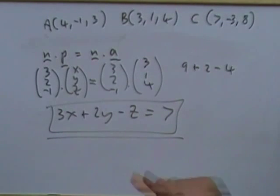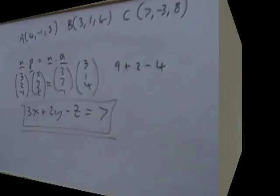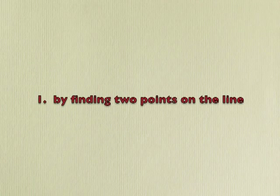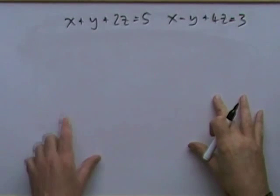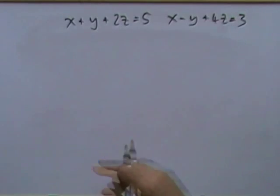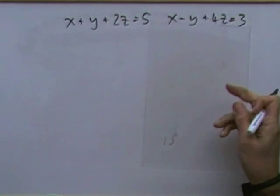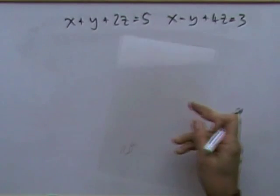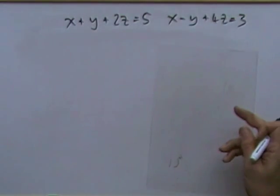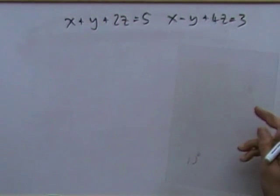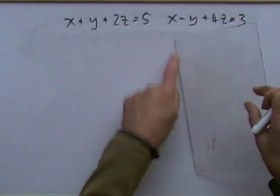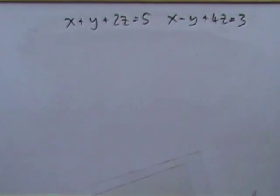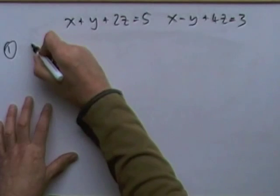Next: finding the equation of the line of intersection of two planes. Two planes intersect in a straight line unless they're parallel — you can check by comparing their normal vectors. There are three methods. Method 1: the method of two points. Find two points that lie in both planes simultaneously.